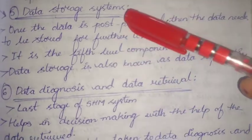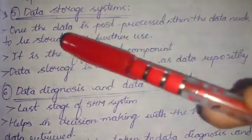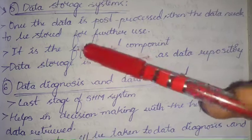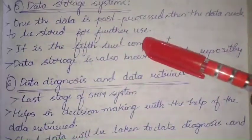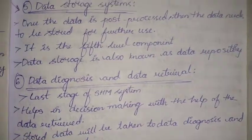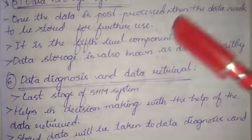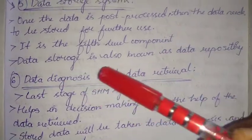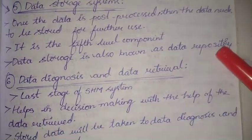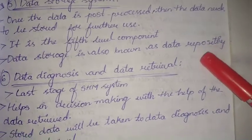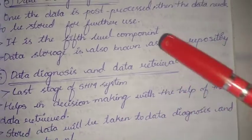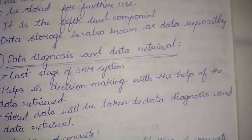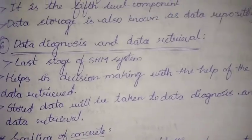Next we have data storage systems. Once the data is post-processed, the data needs to be stored for further use. This is the fifth level component, also known as the data repository. CD archives and hard disks are used for storage.